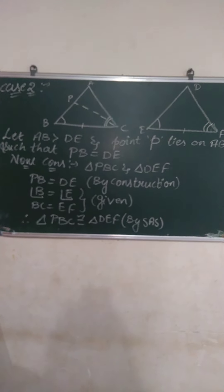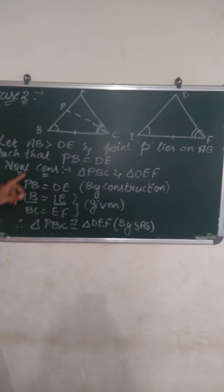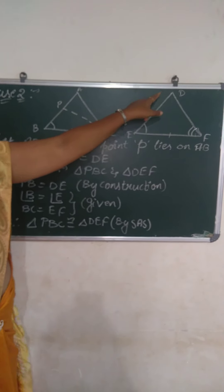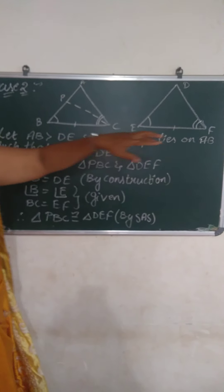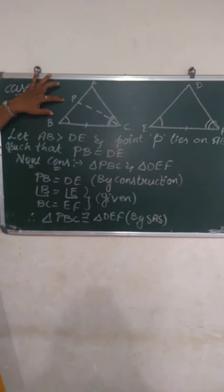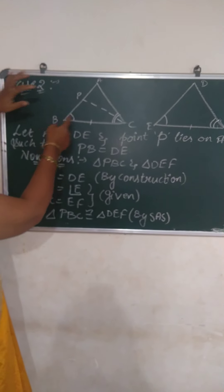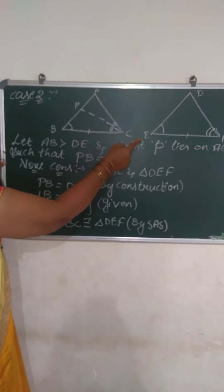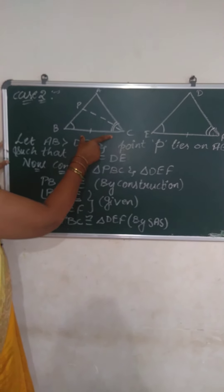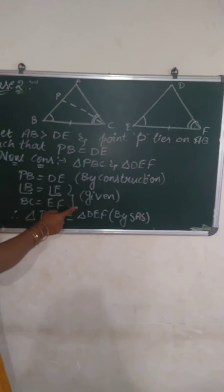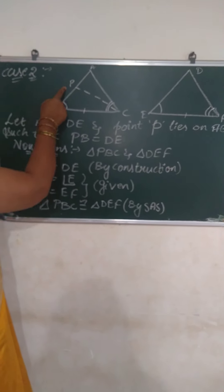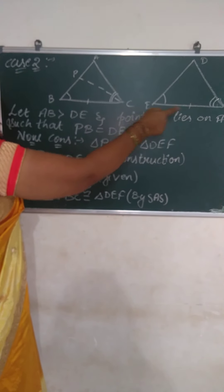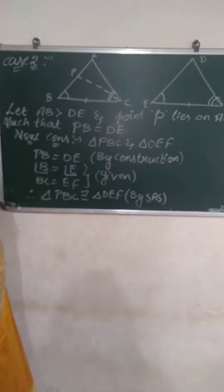Look at the board. I will consider triangle PBC and triangle DEF. By SAS congruence: PB is equal to DE by construction, angle B equal to angle E is given, and BC equal to EF is also given. Hence triangle PBC is congruent to triangle DEF by SAS congruence rule.